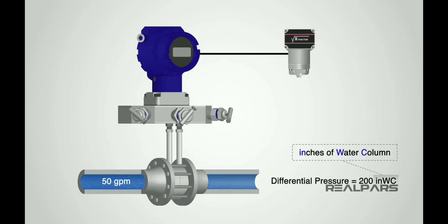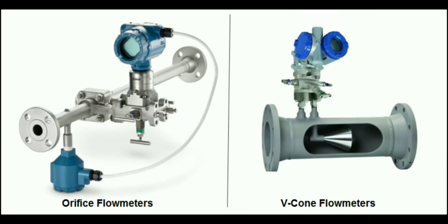Let us look at the working principle of differential pressure measurements. The DP flow transmitter measures the pressure difference, which is delta P, between two points in the flow: upstream denoted as P1 and downstream denoted as P2 of the flow obstruction. This pressure difference is directly related to the flow rate according to Bernoulli's principle and the flow obstruction's design. As the fluid flows through the pipeline, it accelerates as it passes through the flow obstruction and then decelerates downstream, causing a pressure drop. The greater the flow rate, the larger the pressure drop.